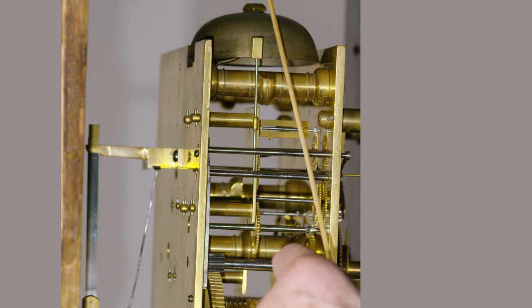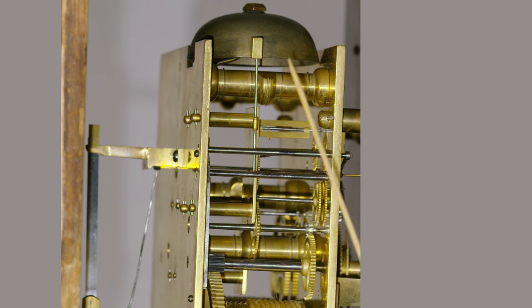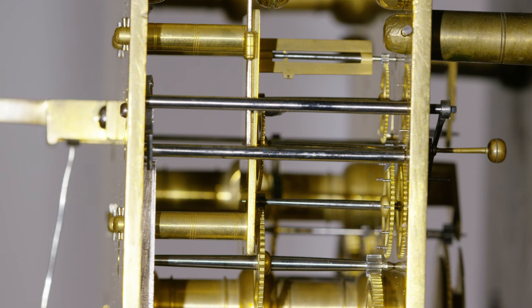Instead of having a great big bell at the top here, you've got this lovely little quiet bell. In keeping with the light movement, it would be impossible to have a great big clonking bell because you couldn't drive it for the year. So it's just coming up to six o'clock.